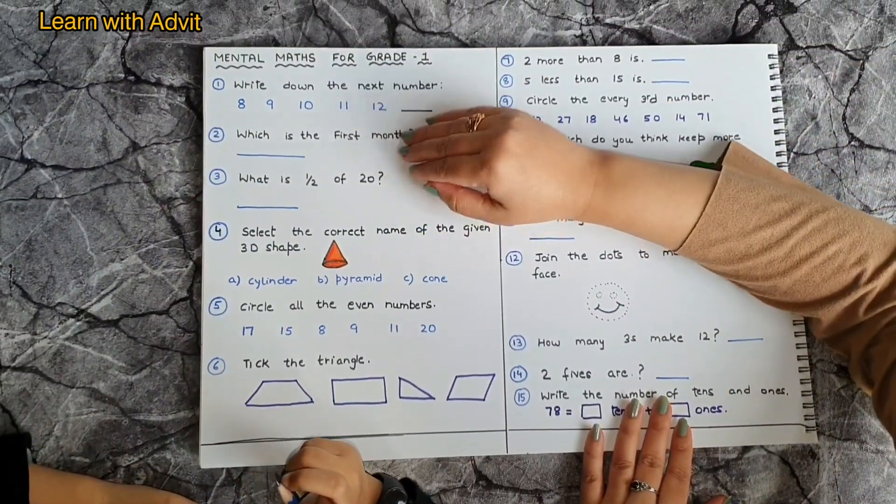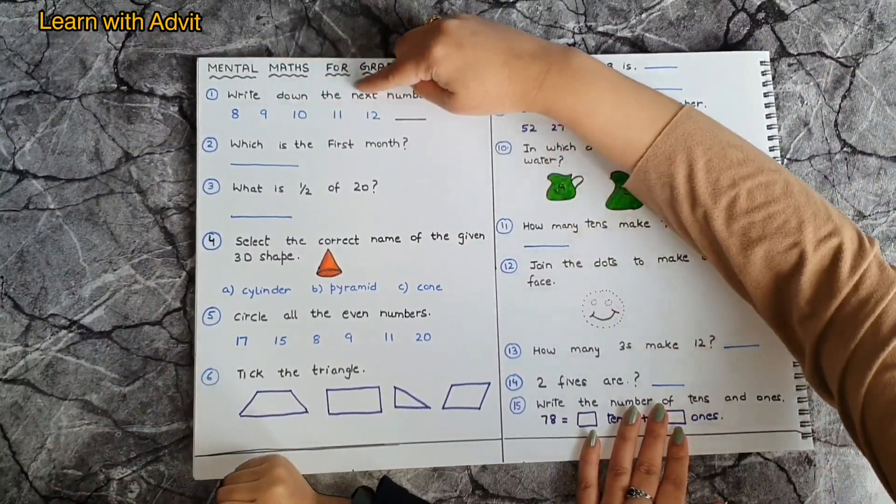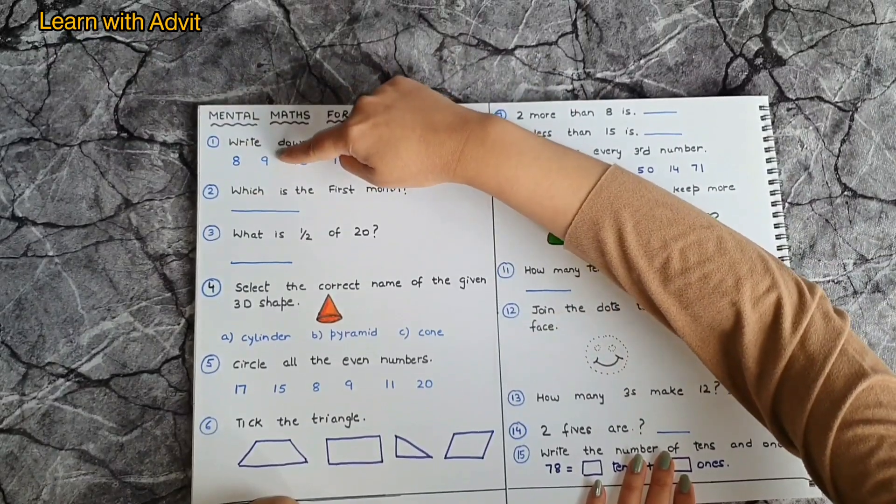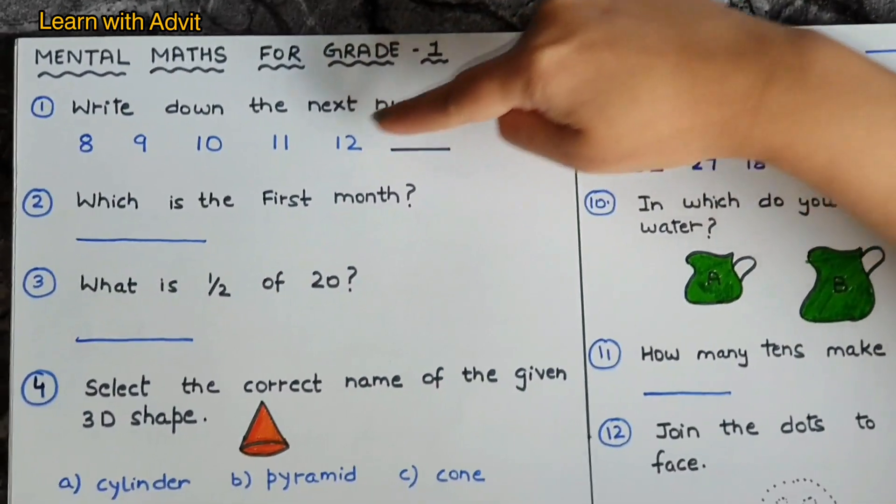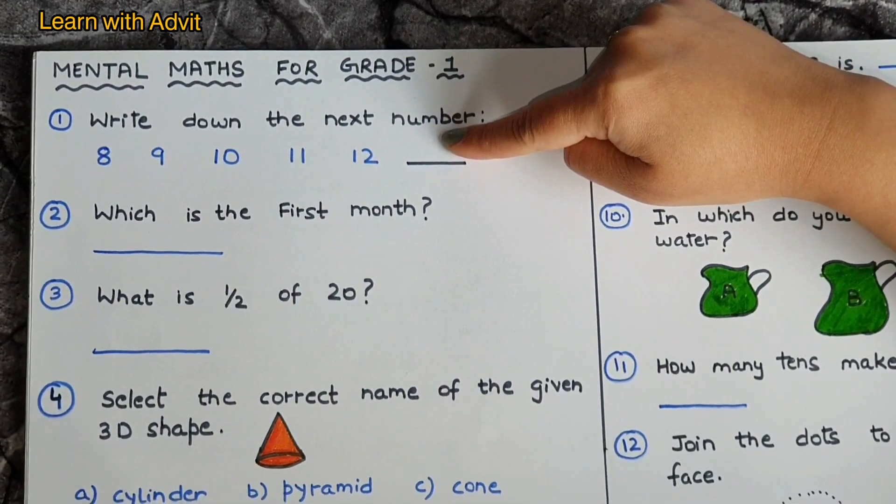So here are some mental maths. Write down the next number: eight, nine, ten, eleven, twelve. Next will be thirteen, write down. Very good.